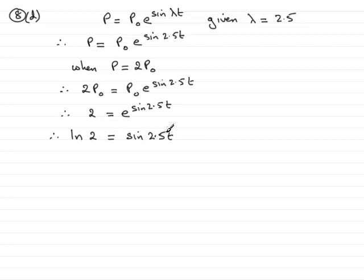So to get to 2.5t, I've now got to remove the sine. That means I need to find the inverse sine of both sides. So we have the inverse sine of the natural log of 2 equals 2.5t.